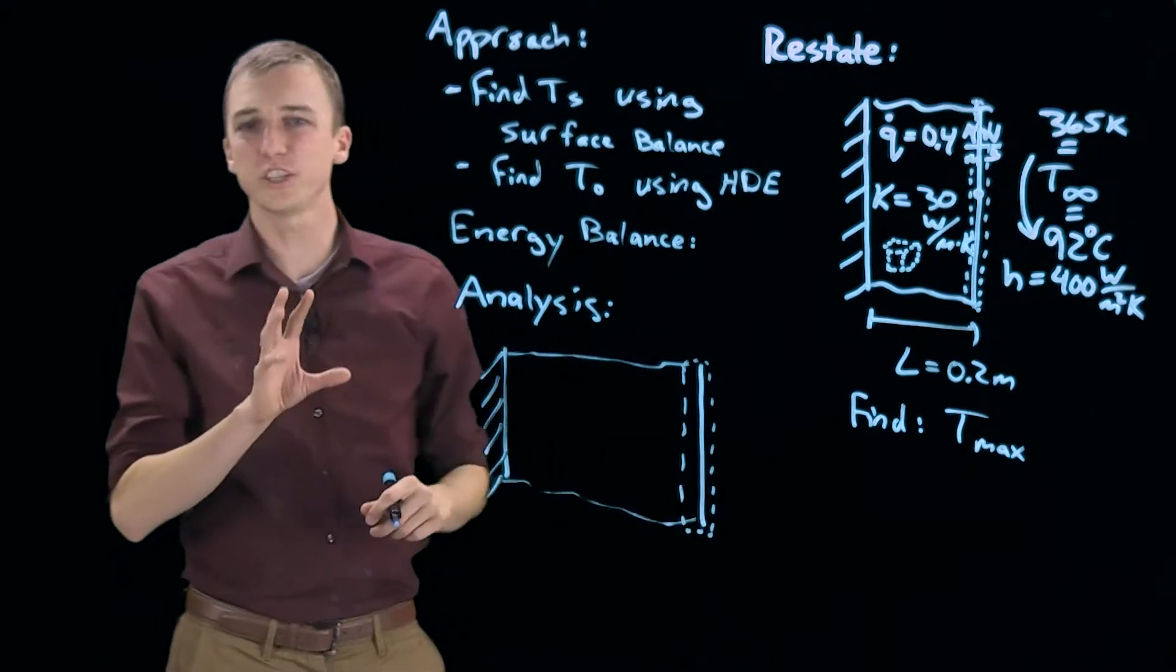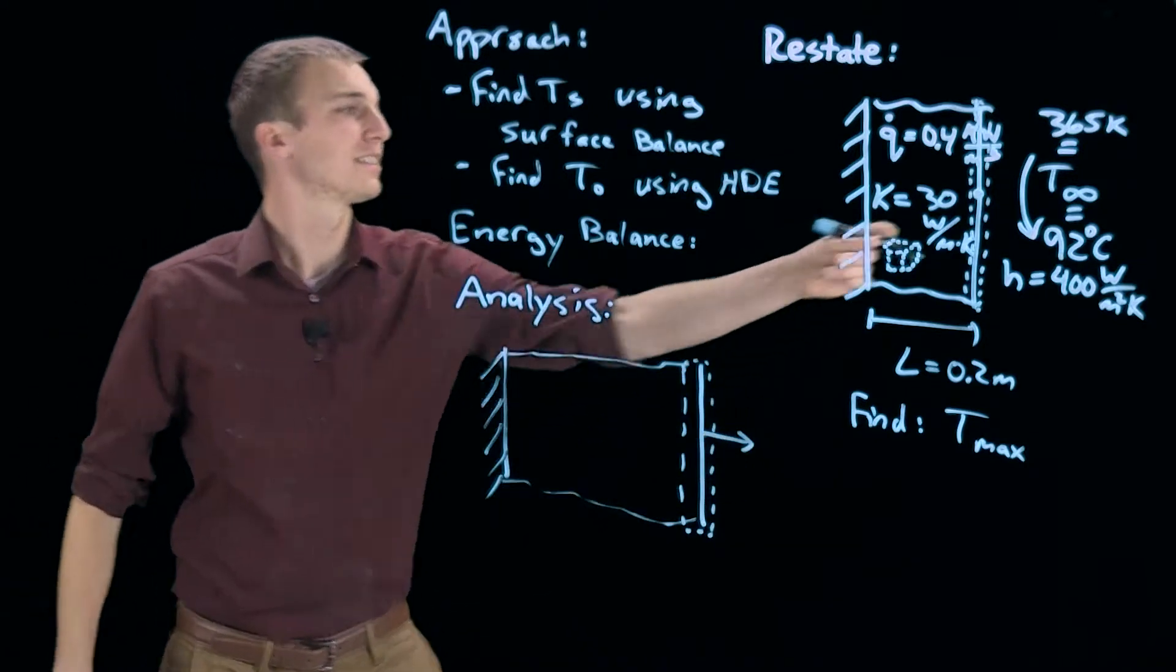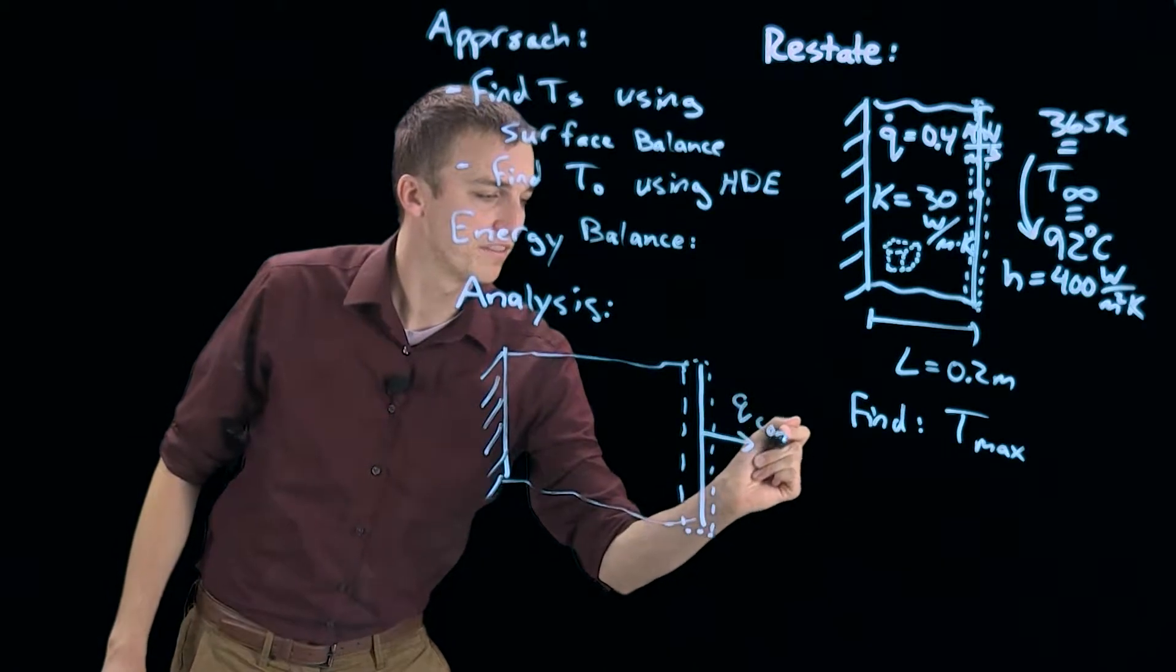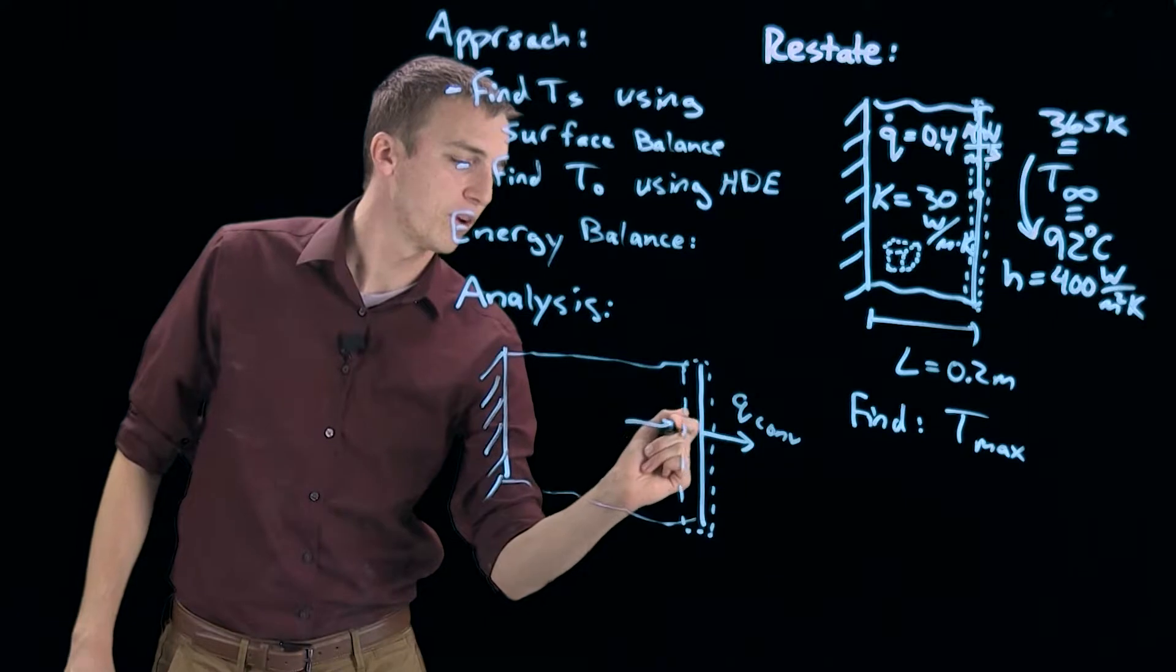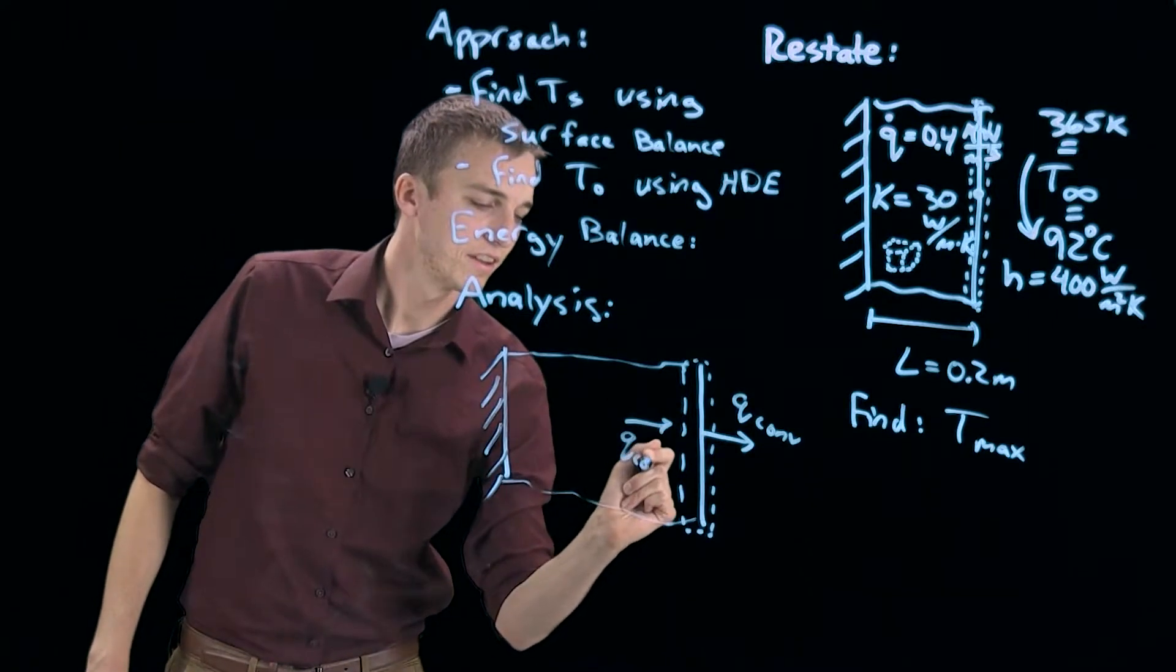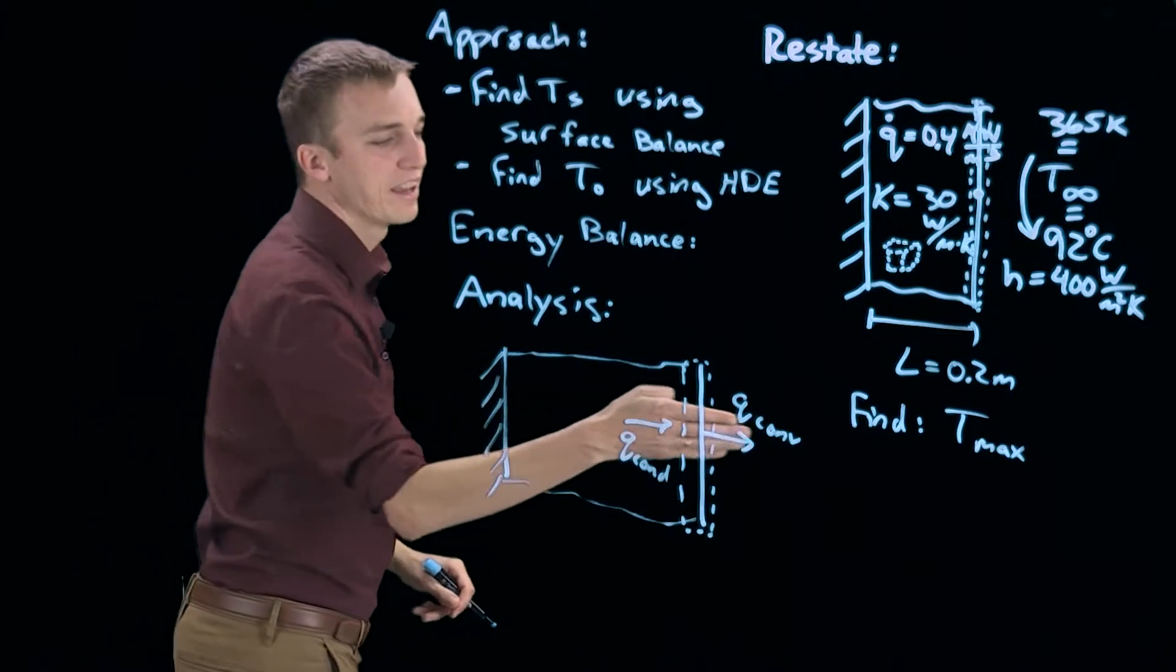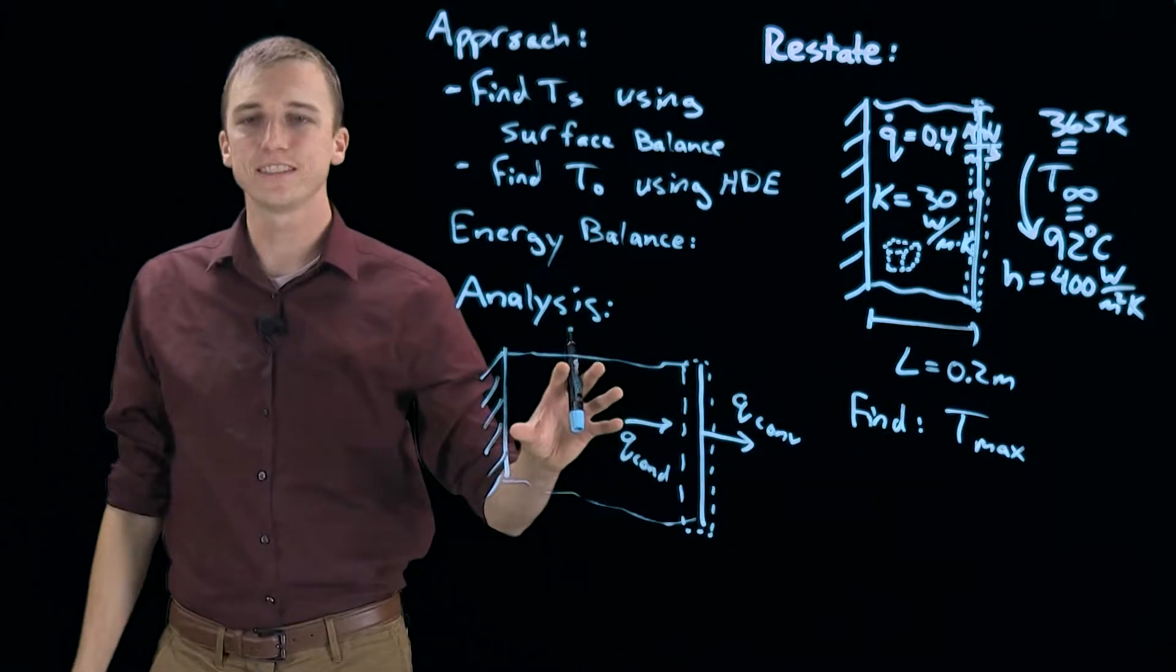So we are doing an energy balance on a control surface. What is leaving is convection, we have a T infinity, so we have Q convection leaving the wall. And then entering the wall we have conduction.